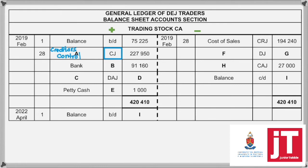Number B refers to the bank here. So bank and a purchase for stock is a CPJ. Then Debtors' Allowances means this is a return of stock sold. So a return of stock sold must always be the cost of the goods sold that is returned — so, Cost of Sales. And then Petty Cash here refers to E, and that is the Petty Cash Journal, PCJ.